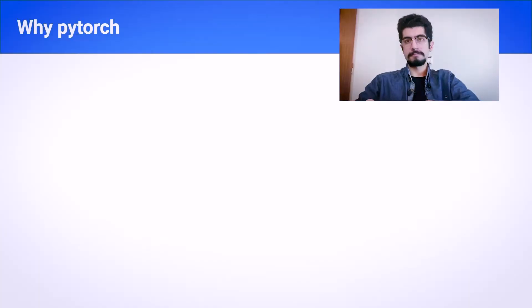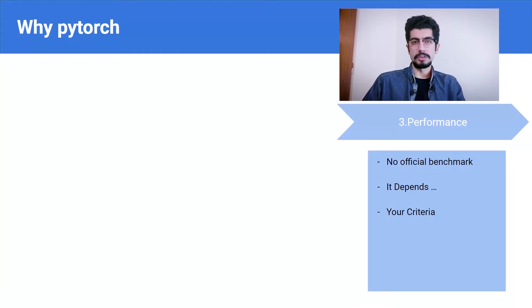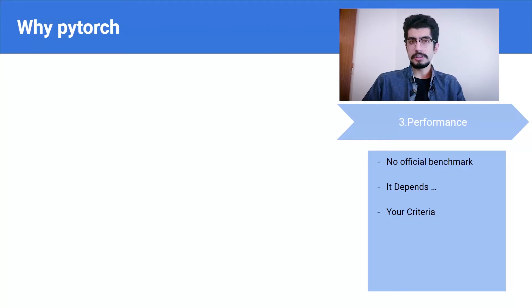Performance at inference time versus training time makes a lot of difference, and maybe that's why results don't completely match. At the end of the day, a slower framework may be better for you, because sometimes PyTorch is a lot faster than others but its CPU or GPU utilization is also higher. So it depends on your criteria — is inference speed the only limitation you have to deal with?